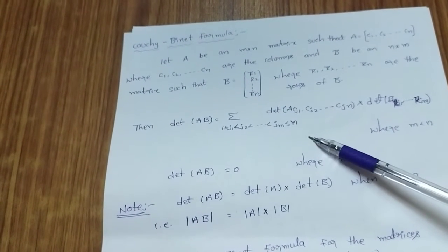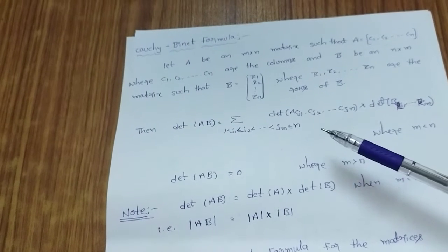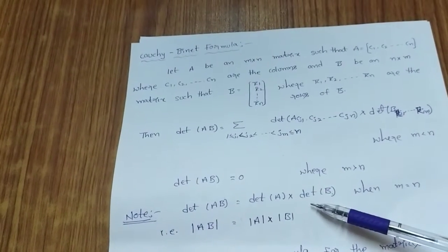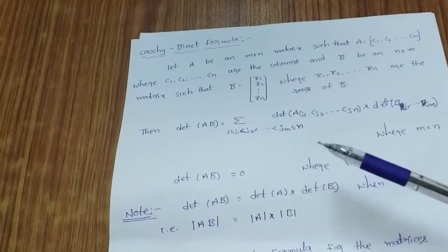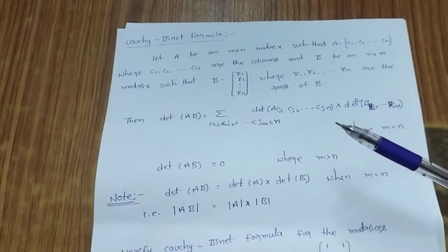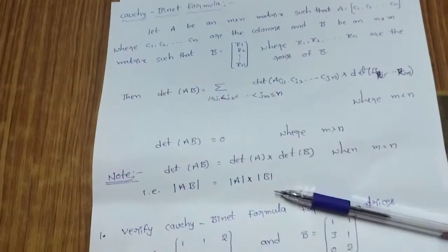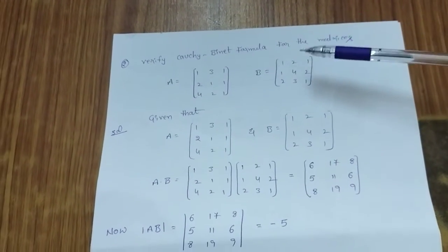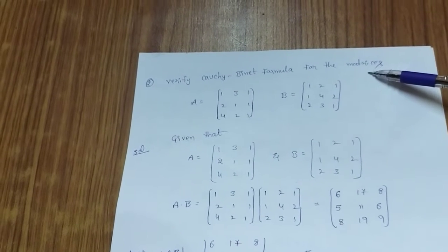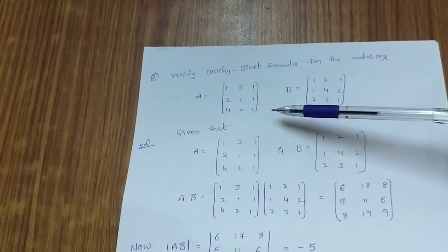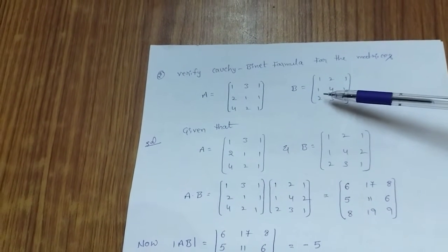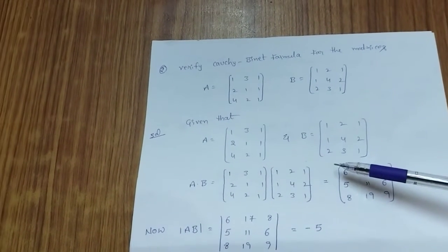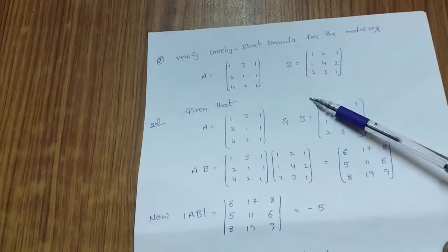Particularly, if they give 3 by 3 matrices we don't have any problem. But if the order is 1 by 3 or 3 by 1, that's where problems arise, and we use the Cauchy-Binet formula. Let me take one example: verify the Cauchy-Binet formula for matrices A = [1 3 1; 2 1 1; 4 2 1] and B = [1 2 1; 1 4 2; 2 3 1].